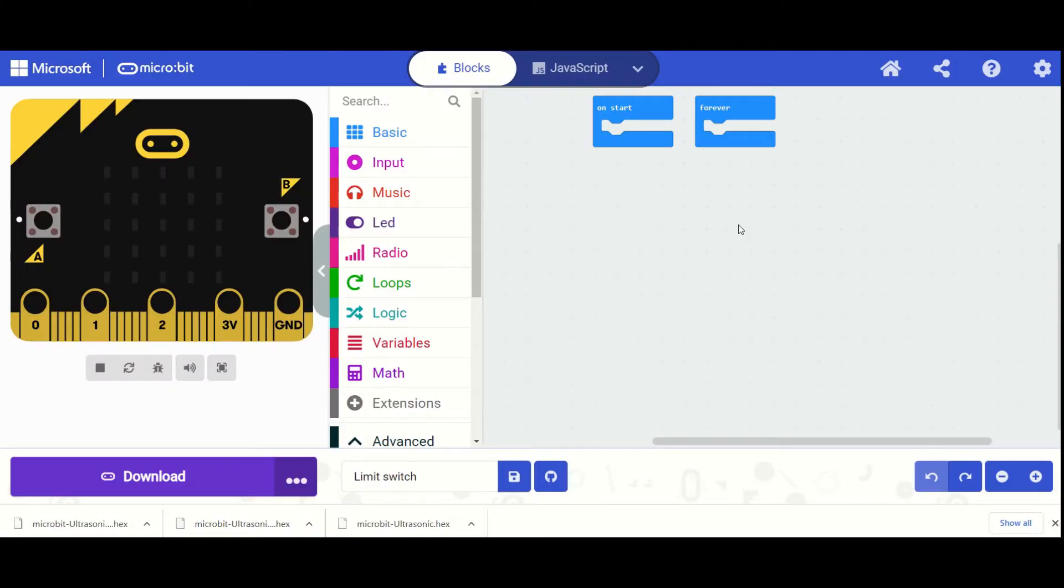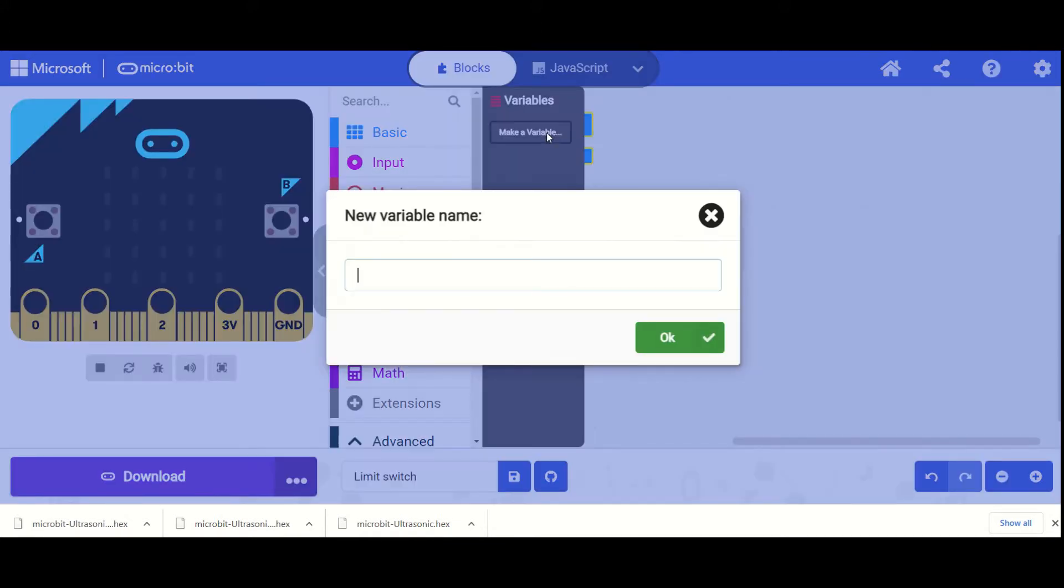So now that we've moved over to our micro:bit code editor, we can start by deleting our on start block. We're going to be focusing on our forever block. We're going to make a variable, we're going to name that variable limit switch.